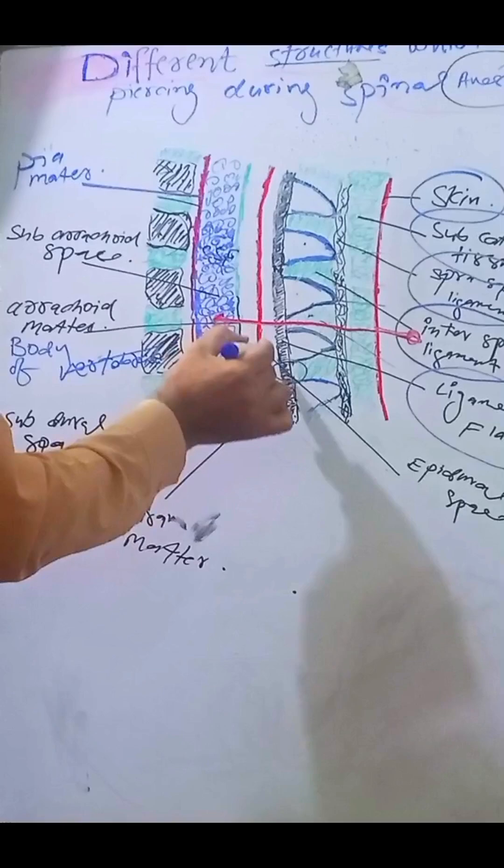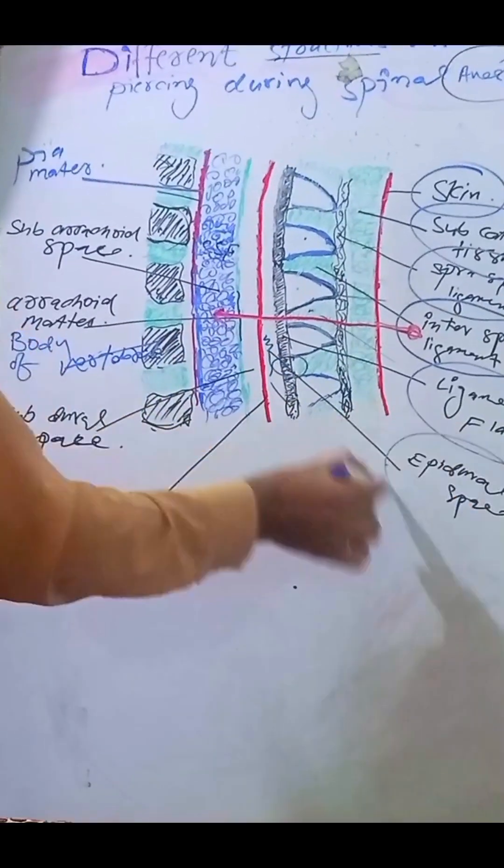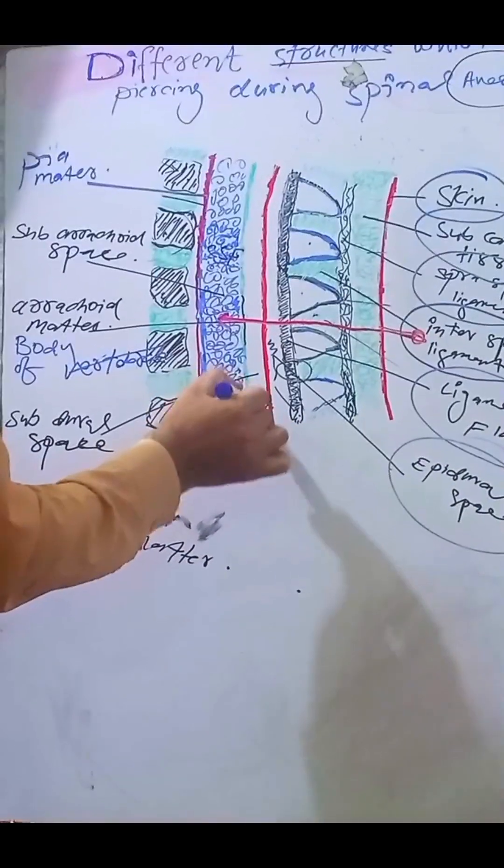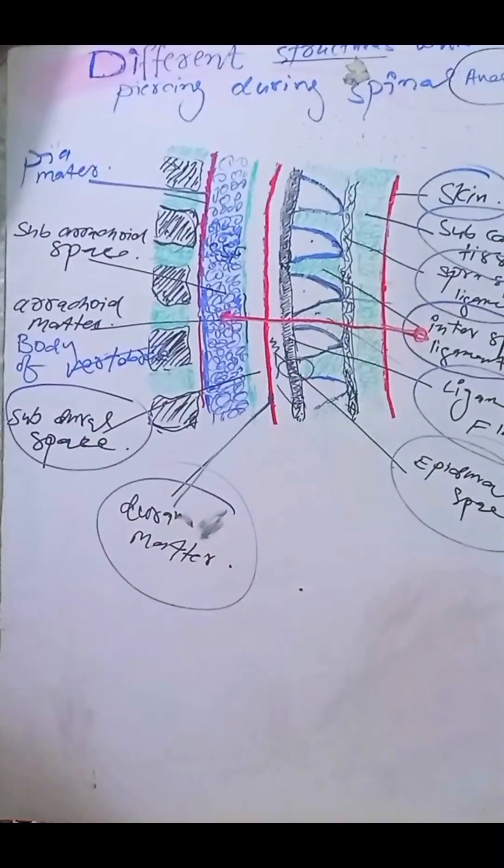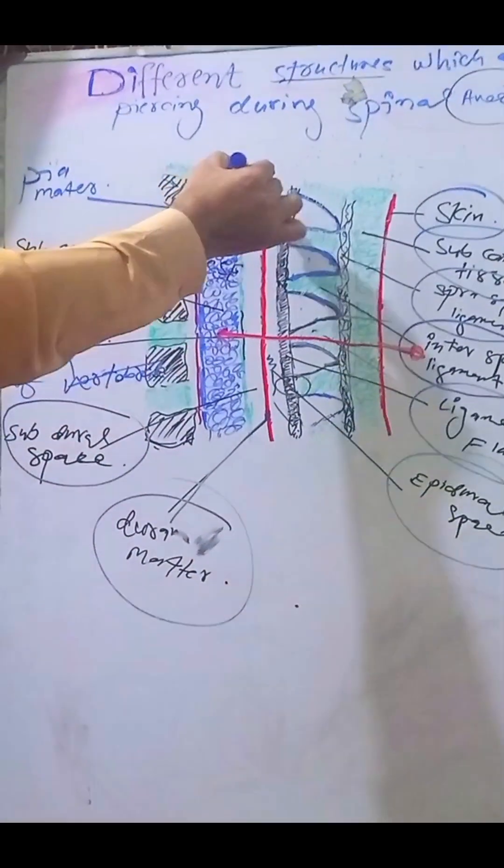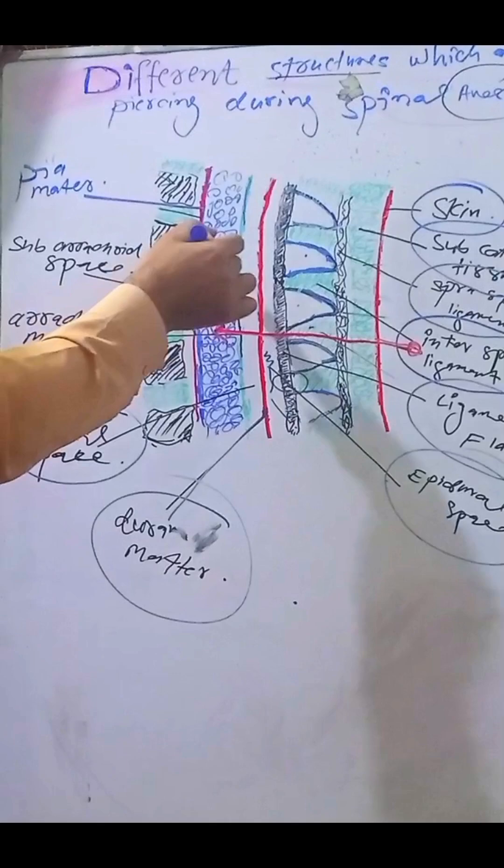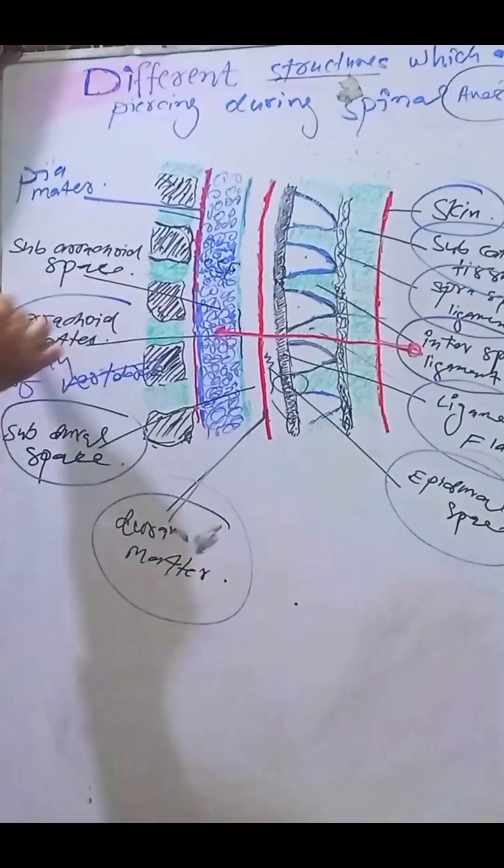When we cross it, we enter epidural space. Next layer is dura matter. After dura, there is another space called subdural space. Next layer is the arachnoid matter.